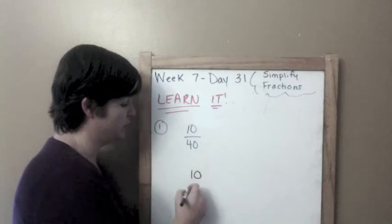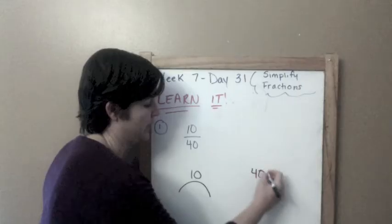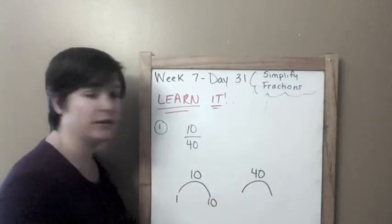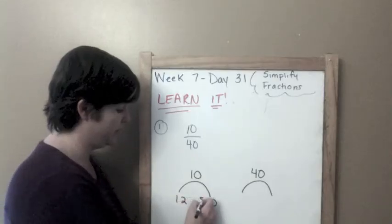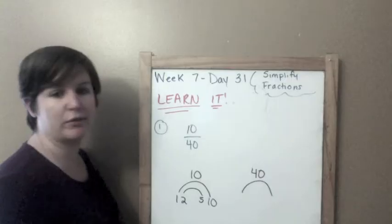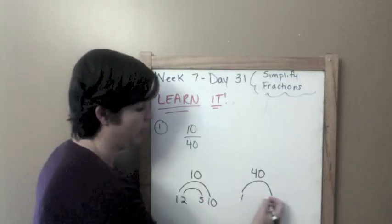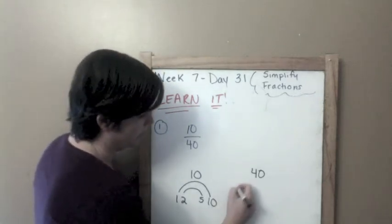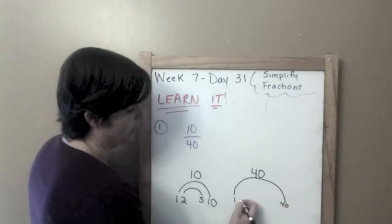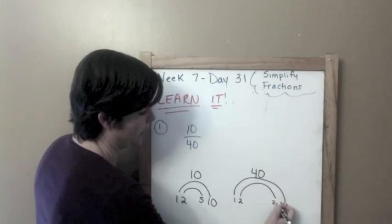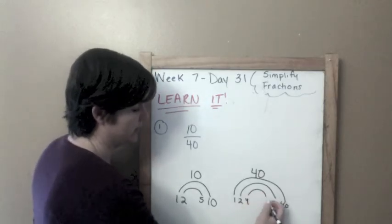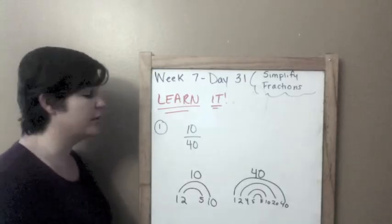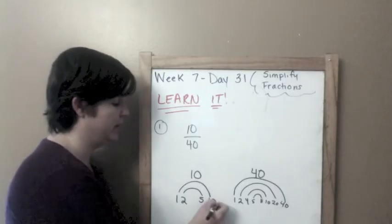That would be using our boss notes, which would be finding the factors of 10 and the factors of 40. I like doing that by doing a factor rainbow for them. 1 times 10 is 10, 2 times 5 is 10, and nothing else in between. For 40, we've got 1 and 40, 2 times 20, 4 times 10, and 5 times 8. Now we've got to find the greatest common factor, the factor that is the greatest number that they have in common, which would be 10.